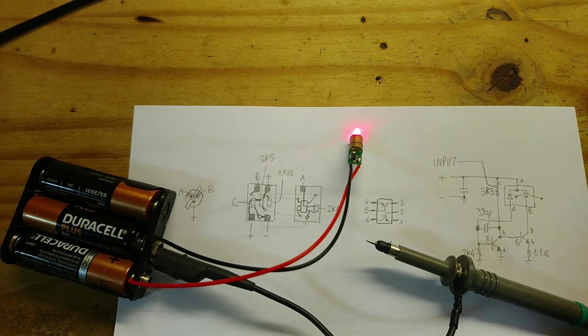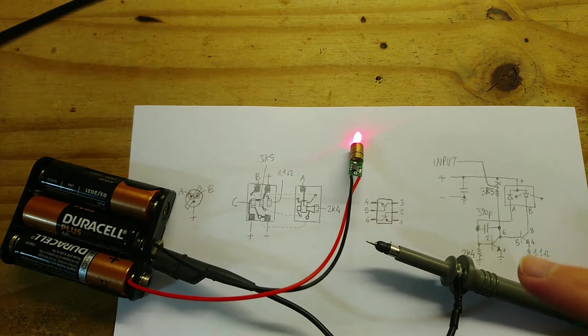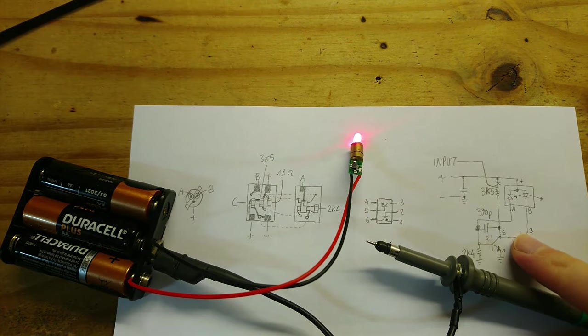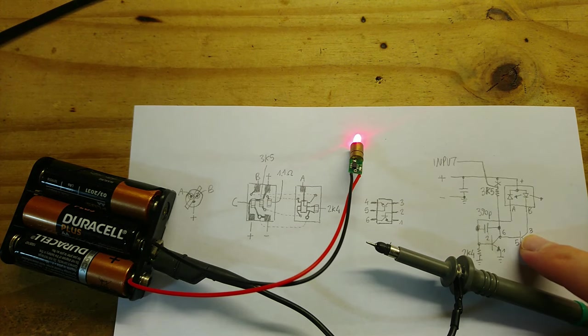Before we modify the circuit, let's probe it directly to confirm it is oscillating. Now, the collector of this transistor that drives the laser diode is P3.